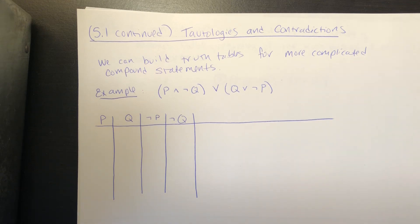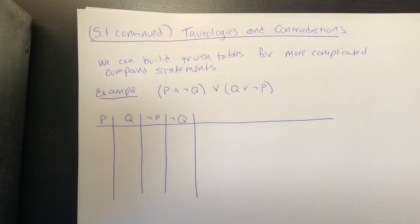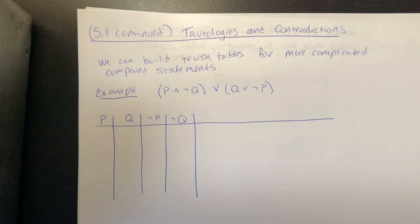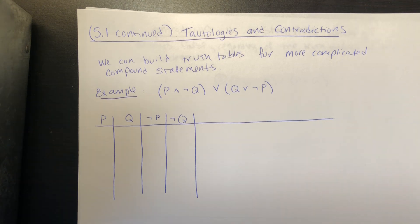Today we're going to wrap up section 5.1 by talking about tautologies, contradictions, and equivalent logical statements. In the last section we talked about different logical connectives like ands, ors, negations, and implications, and how we can build them up to make more meaningful statements. Using those basic rules and those basic truth tables, we can build up truth tables for more complicated statements, kind of like how we did for a biconditional — an if and only if statement.